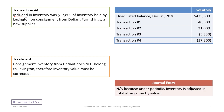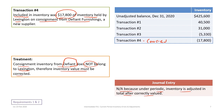Transaction four: included in inventory is $17,800 of product held by Lexington on consignment from another company. Lexington doesn't own consignment inventory — it belongs to Defiant. Therefore, the inventory value must be corrected by removing the consignment inventory from Lexington's account. There are no associated transactions or supplier bills, since Lexington only pays the supplier once the product is sold and retains the markup as profit.